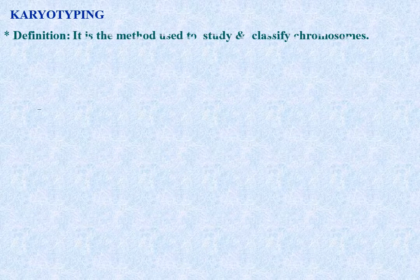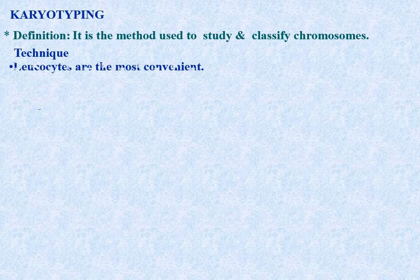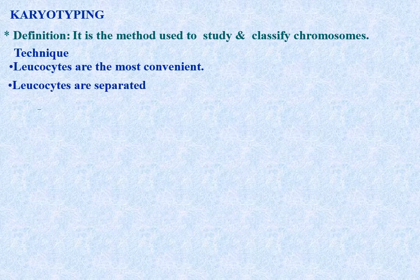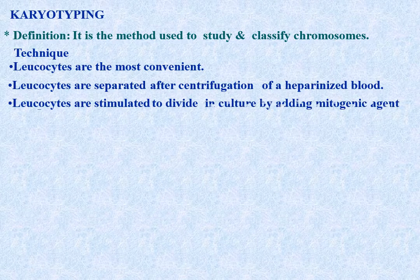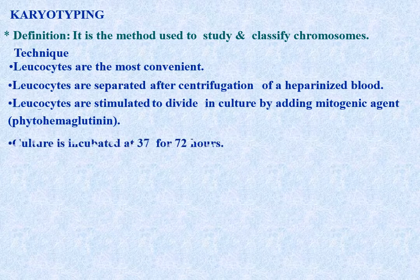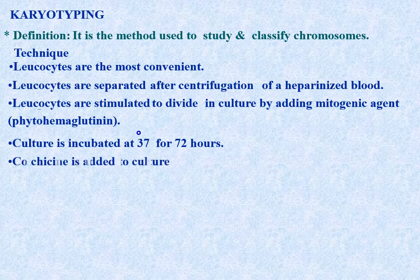Karyotyping - definition: it is the method used to study and classify chromosomes. Technique: leucocytes are the most convenient cells used. They are separated after centrifugation of a heparinized blood sample and stimulated to divide in culture by adding a mitotic agent. The culture is incubated at 37 degrees centigrade for 72 hours.